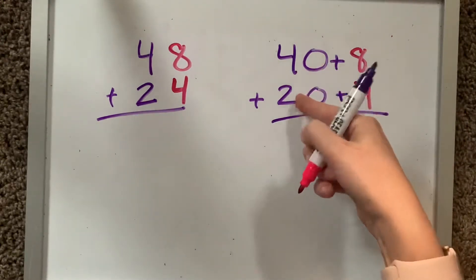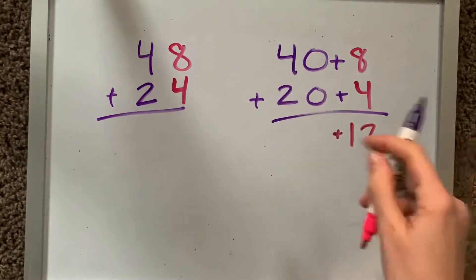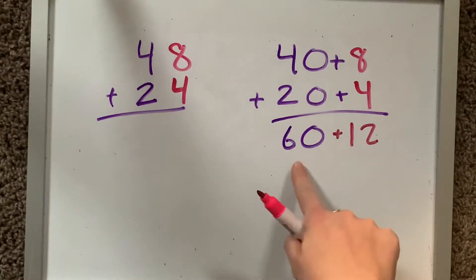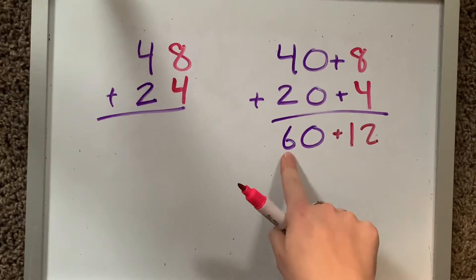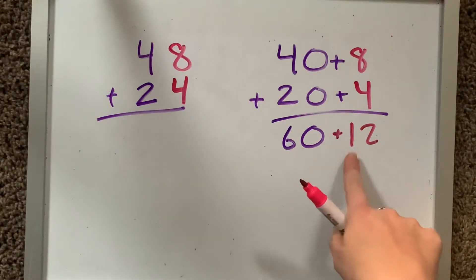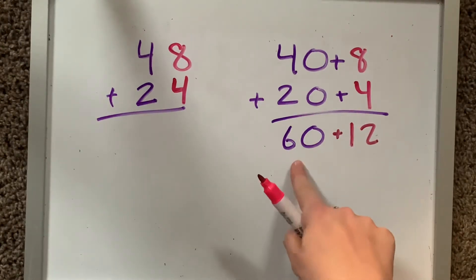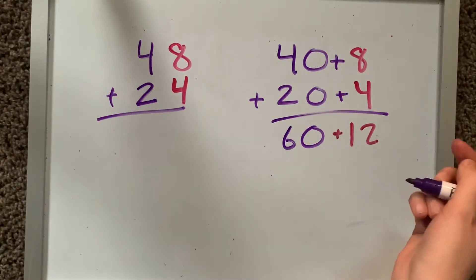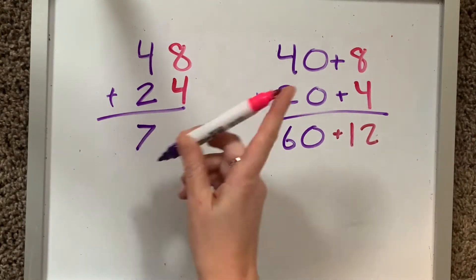And then 40 plus 20 will 40, 50, 60. And now we just need to add these together. Well, I've got six tens over here and I need to add a 10 and two ones. So that would be 72. So our answer would be 72.